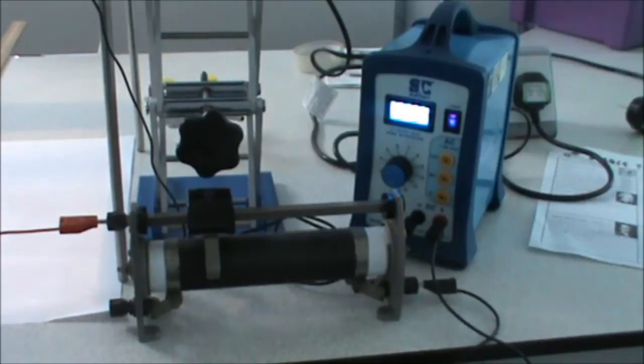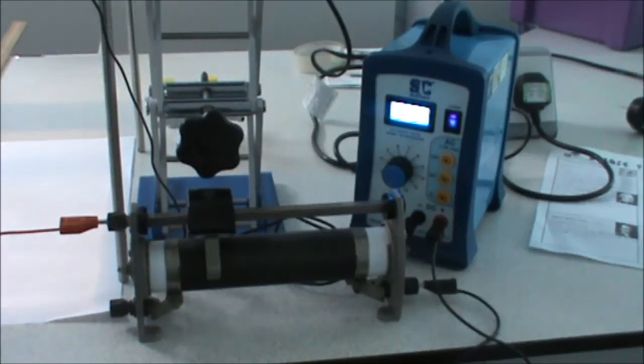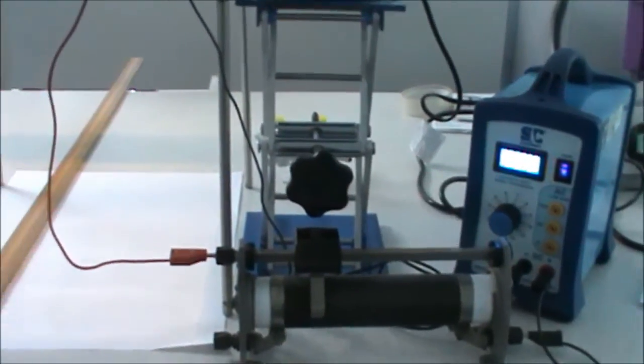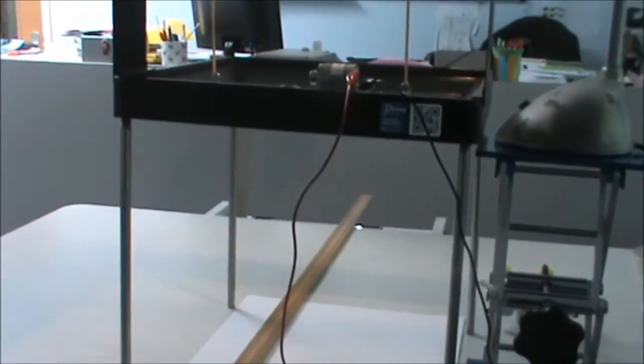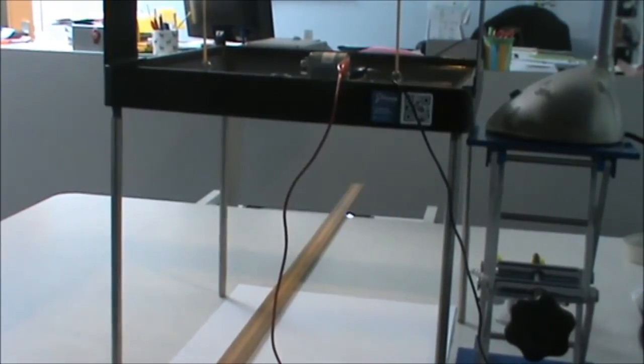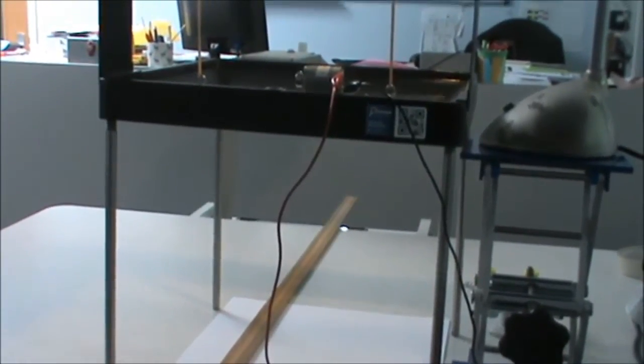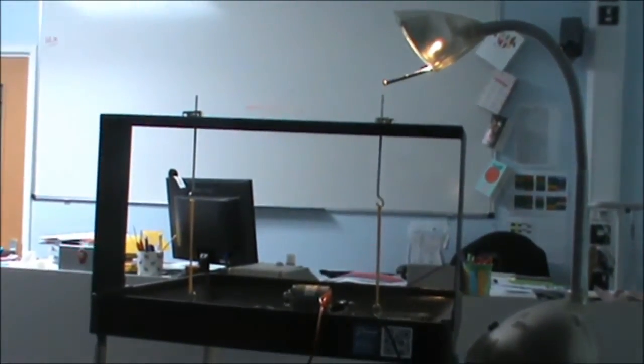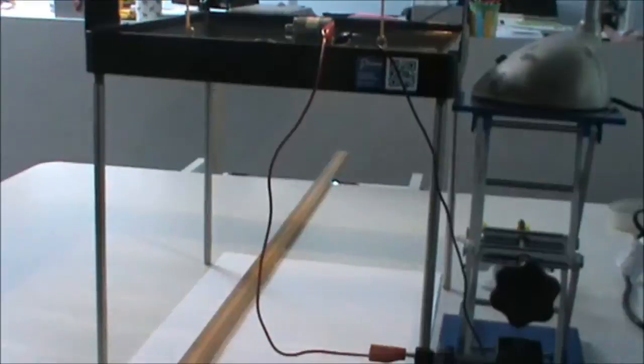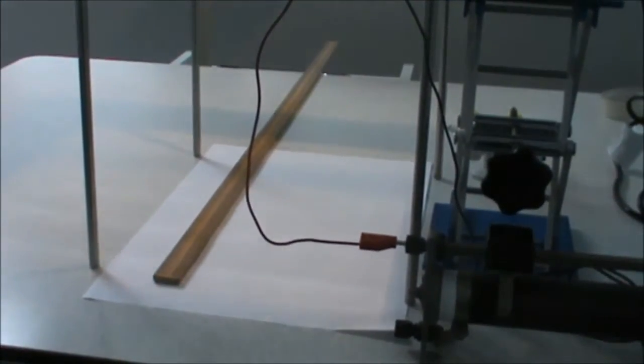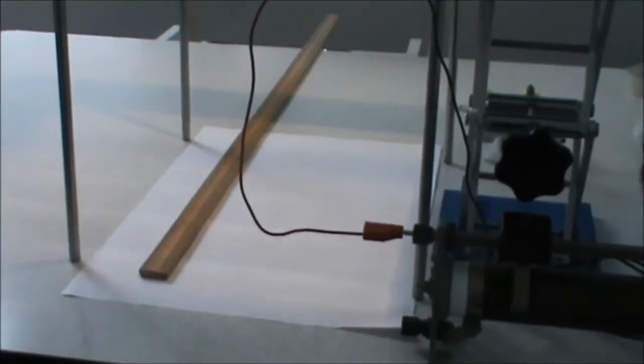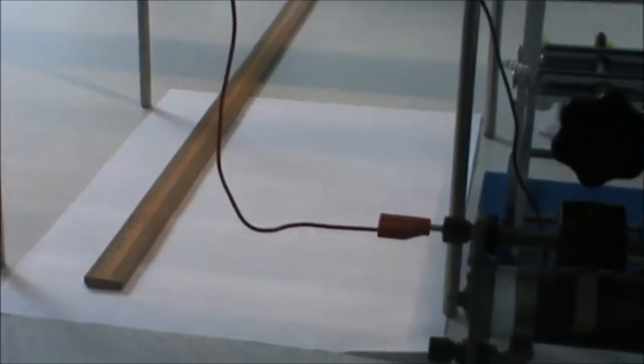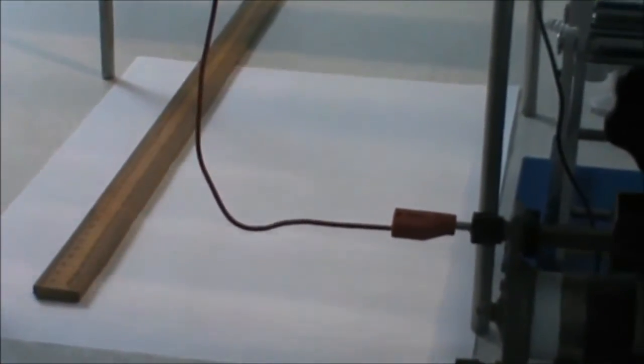To record our water waves, we start with our power supply connected up to our rheostat. This enables us to change the voltage provided to our motor which is sitting on our horizontal bar, which is known as a dibber, connected into our water tank. The water tank has a lamp above it, and this lamp enables us to project the images down onto the paper, which enables us to measure the distances and count the number of waves we get per second.